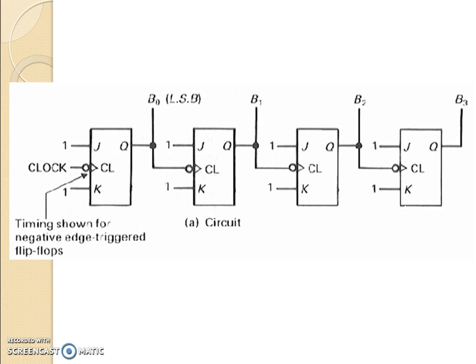If you check out the circuit here, the clock is given as a negative edge trigger clock at the first flip-flop, and the second flip-flop gets its clock from the output of the first flip-flop. When the output of the first flip-flop changes, only then will the output of the second flip-flop change accordingly.